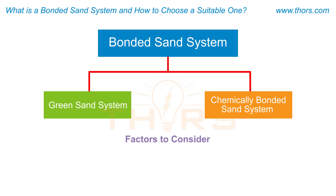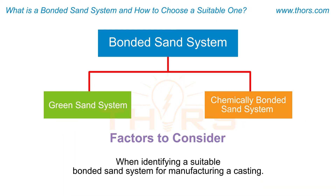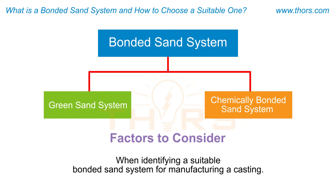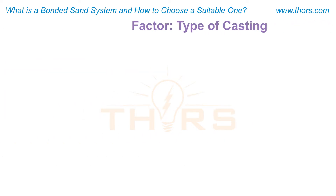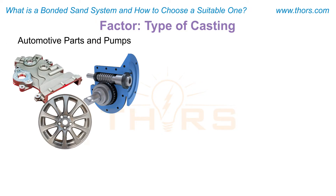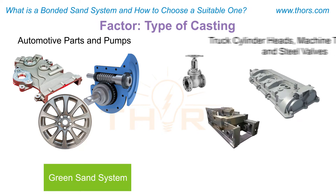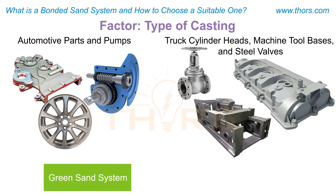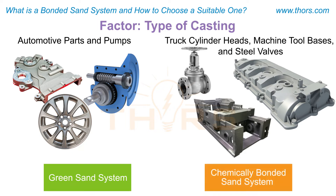The following factors need to be considered when identifying a suitable bonded sand system for manufacturing a casting. The first factor is the type of casting. To cast small components such as automotive parts and pumps, a foundry chooses the green sand system. To cast large components such as truck cylinder heads, machine tool bases, and steel valves, a foundry chooses the chemically bonded sand system.